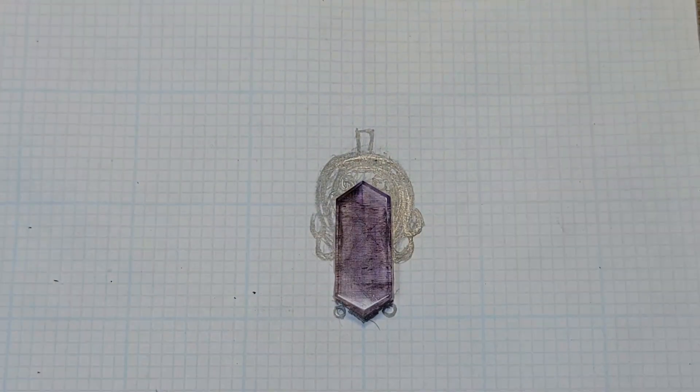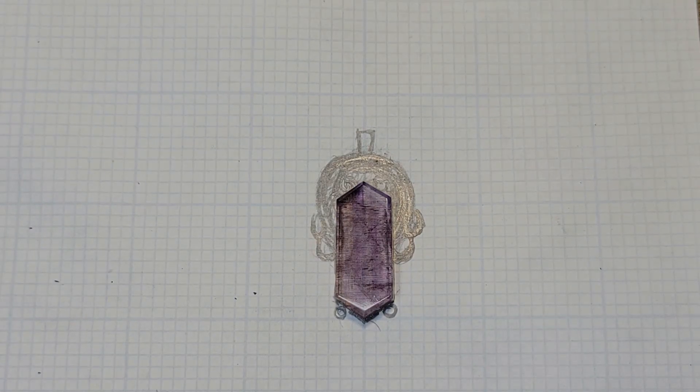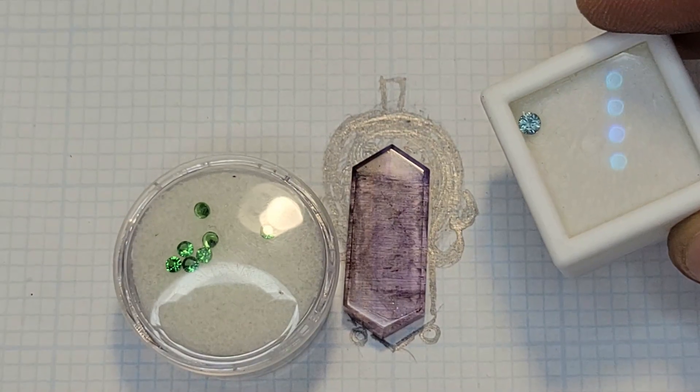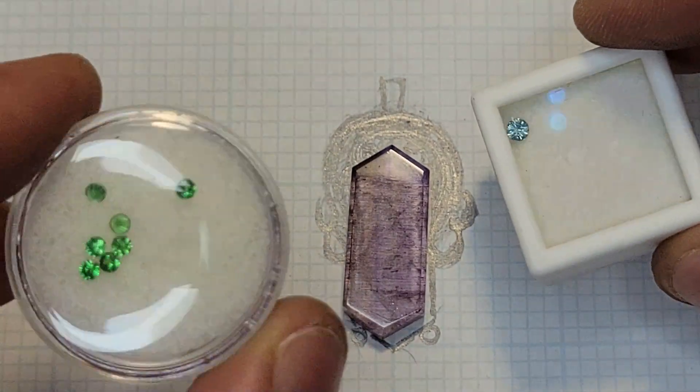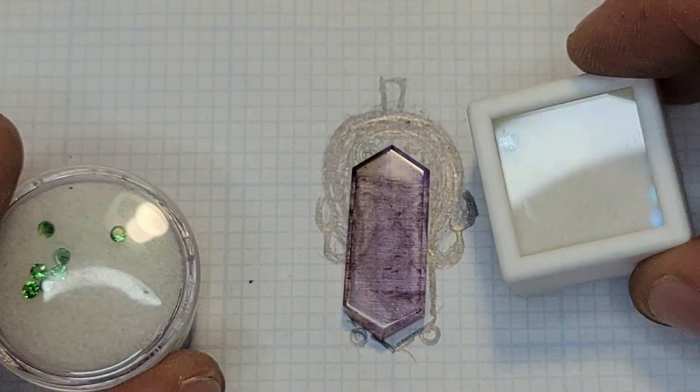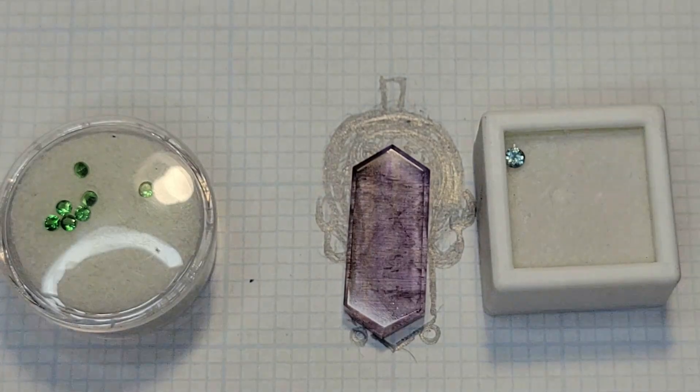And I'm thinking of doing kind of a mystic kind of color tone. And the reason I say mystic is because I think of greens and blues and purples when I think of that sort of thing. And so I'm thinking of doing a Montana sapphire and some savorite garnets for the accents in this design. Let me know your thoughts in the comments.